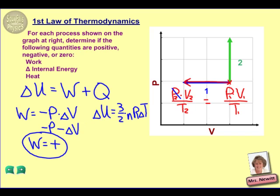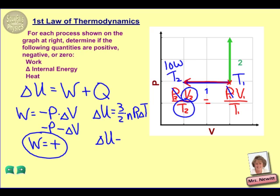For process one, pressure is not changing, so that would not be part of our equation. Notice that we again have a decrease in volume. So if we begin with a temperature value here, we must have a lower value at the end. If the volume is going down, the temperature at this point must also be going down. So for process one, there is a decrease in temperature, and if there is a decrease in temperature, then there is also a decrease in internal energy — delta U is negative.